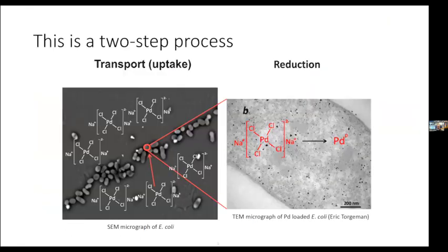Conceptually, this is a two-step process, and that was our starting point for the project. In principle, there's a step where the bacterial cells absorb or take up the heavy metal salts into the cells, and then there is a chemical reduction. Potentially the pathways and enzymes and proteins involved in these processes are different for these two different steps.